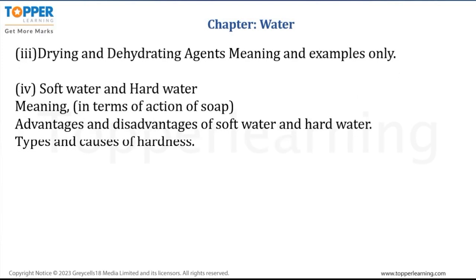Then, what is the difference between a drying agent and a dehydrating agent? Drying agents are also called desiccants, which absorb atmospheric moisture only, while dehydrating agents, like concentrated H2SO4, remove water molecules from a chemical compound — for example, it can decompose a sugar molecule to extract water.